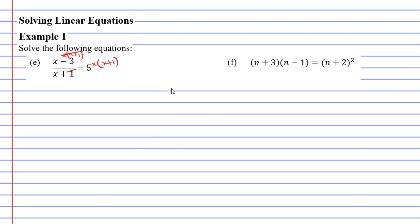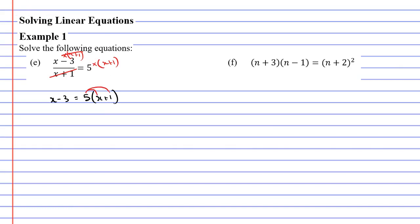This is going to cancel out the whole of X plus 1, which leaves us with X minus 3 — we've got rid of that fraction. On the right-hand side we've got 5 bracket (X plus 1). Brackets are also a pain to work with, so we expand them: 5 times X is 5X, and 5 times 1 is 5. We've got X minus 3 on the left. Now we've got pronumerals on both sides — X on the left and 5X on the right.